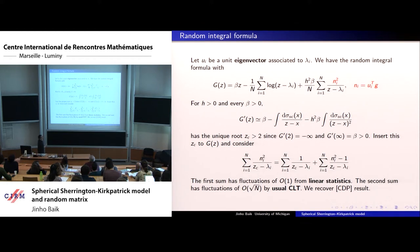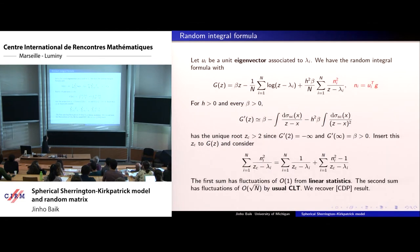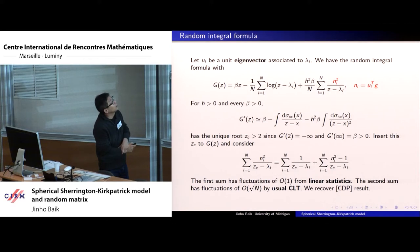The single random integral formula still applies for the external field model, but now when diagonalizing M as U lambda U^T, the eigenvector components U_i^T G appear in the formula. Specifically, the formula for G now includes eigenvalue terms plus a sum involving (U_i^T G)^2 divided by (z - lambda_i). Taking a derivative and approximating by the semicircle law, these eigenvector dot products have expected value one, so one term becomes a linear statistic and the other involves the deviation n_i^2 - 1.